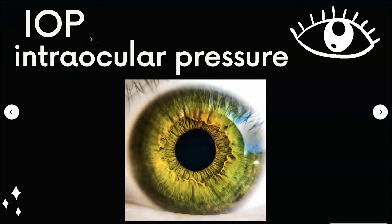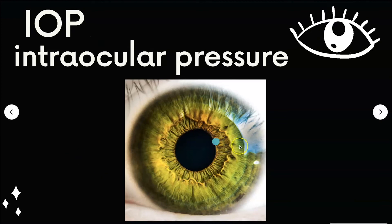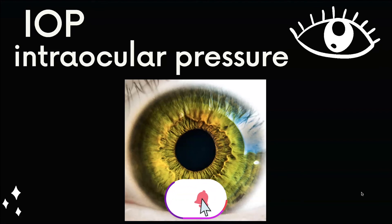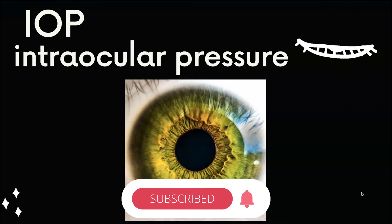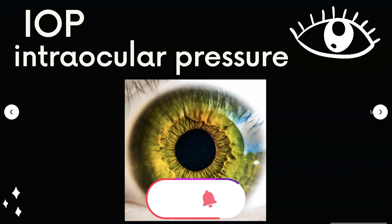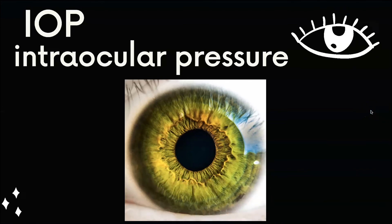IOP stands for intraocular pressure, which is the fluid pressure inside the eye. Everything in the body needs to maintain equilibrium, and organs with fluid need to maintain a pressure to preserve homeostasis. Eye pressure is measured in millimeters of mercury; normal eye pressure is between 12 to 22. If intraocular pressure is high, the patient could have glaucoma or ocular hypertension. Ocular hypertension is when someone has high IOP but is not showing signs of glaucoma. It's important to get regular vision exams, because if your IOP is high and you develop glaucoma, you could lose your vision.